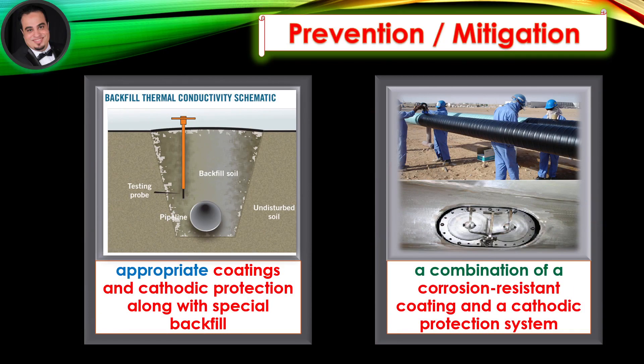Prevention and mitigation: Soil corrosion of carbon steel can be minimized through the use of appropriate coatings and cathodic protection, along with special backfill to prevent rock damage to the coating. As illustrated in the figure, the most effective protection is a combination of a corrosion-resistant coating and a cathodic protection system.